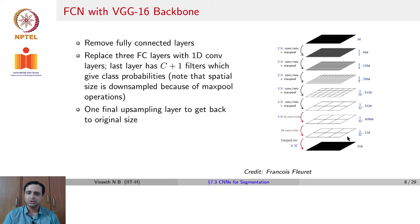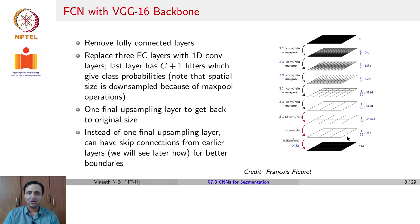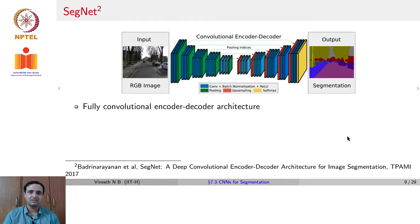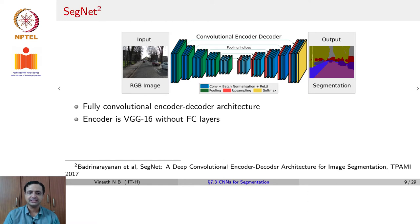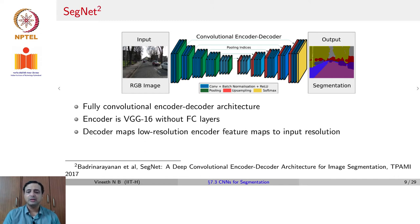Transpose convolution is not the only way to obtain upsampling — we can do several things including skip connections. Another method that came around the same time as FCNs is SegNet. SegNet is a fully convolutional encoder-decoder architecture. Similar to FCNs, the encoder is VGG16 without FC layers. The decoder maps the low-resolution encoder feature maps to input resolution. The difference from FCN is that FCN had only one upsampling layer towards the end, whereas SegNet has a sequence of decoder layers which mirror the architecture of the encoder.